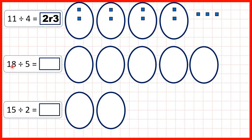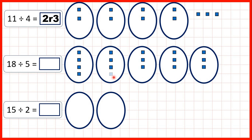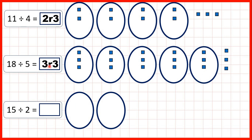Now we can share out 18 counters into 5 groups. Again, we have the problem that we need equal groups when we're sharing, so these 3 counters can't be shared out. We have 3 counters in each group and 3 remaining, so we have 3 remainder 3.